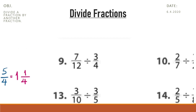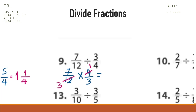In question number 9, the dividend 7 over 12 multiplied by the reciprocal of the divisor is 4 thirds. Now we can simplify 12 and 4 — both are divisible by 4: 12 divided by 4 is 3 and 4 divided by 4 is 1. So, 7 multiplied by 1 is 7 and 3 multiplied by 3 is 9. And this is the simplest form.